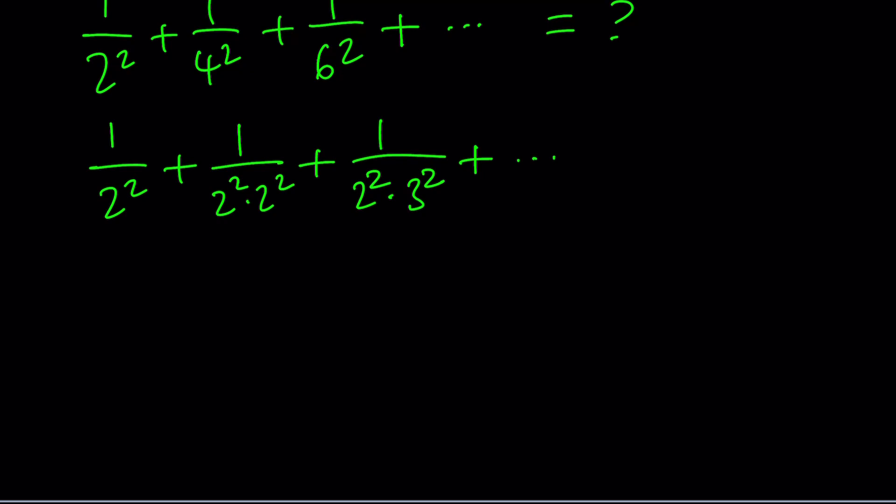Since every denominator has 2², we can factor out 1/2². Inside the parentheses this gives us 1 + 1/2² + 1/3² and so on.